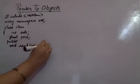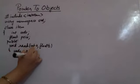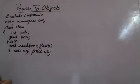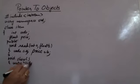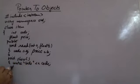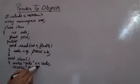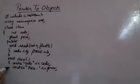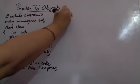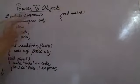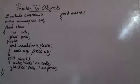There is a 'void read' function taking int a and float b, which sets code = a and price = b. Similarly, there is a 'void show' function which prints the code and the price using cout. That is all that is in the class — no constructor, just these two member functions.